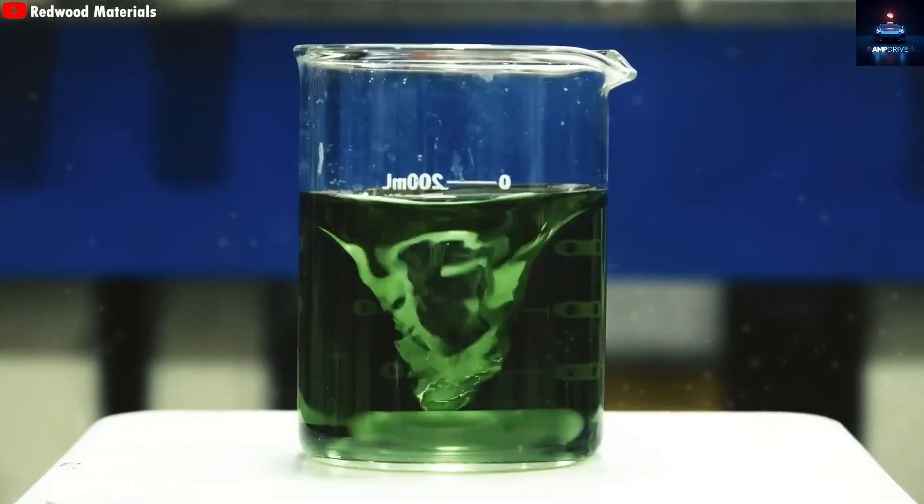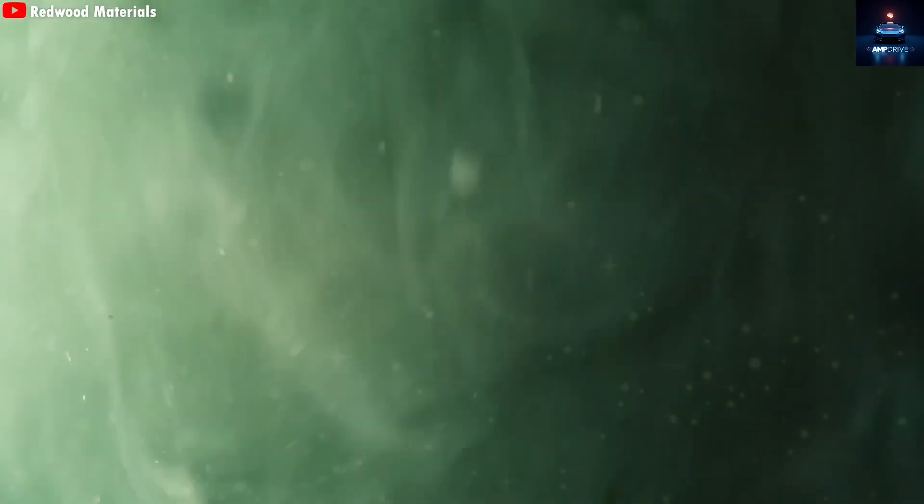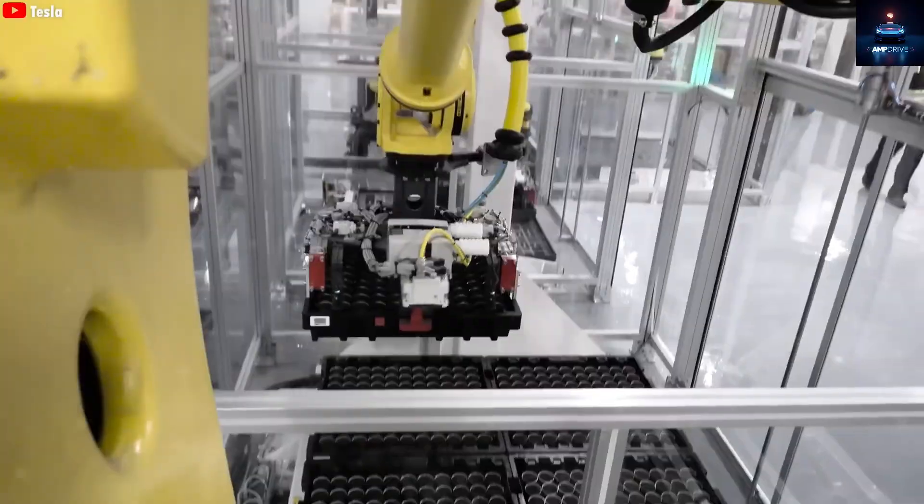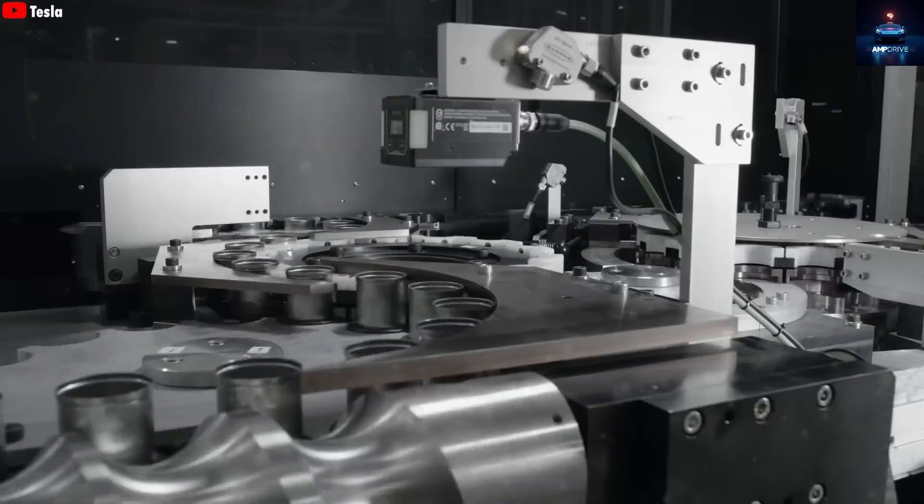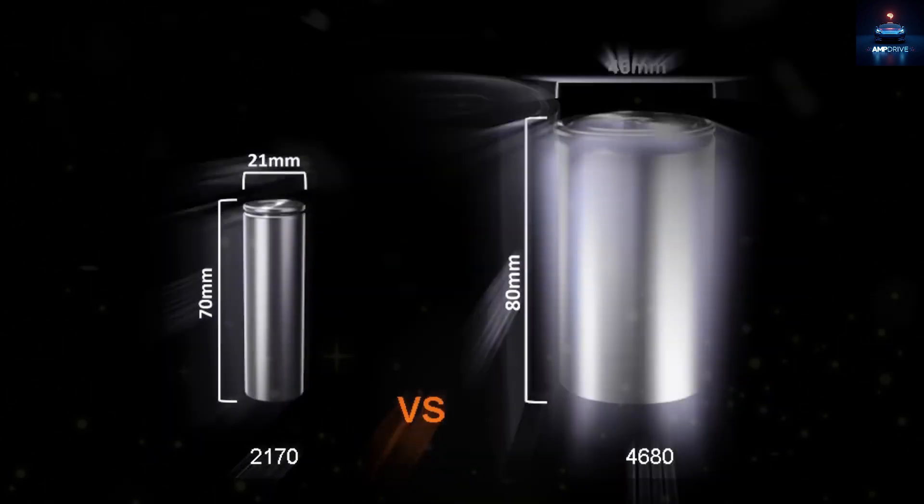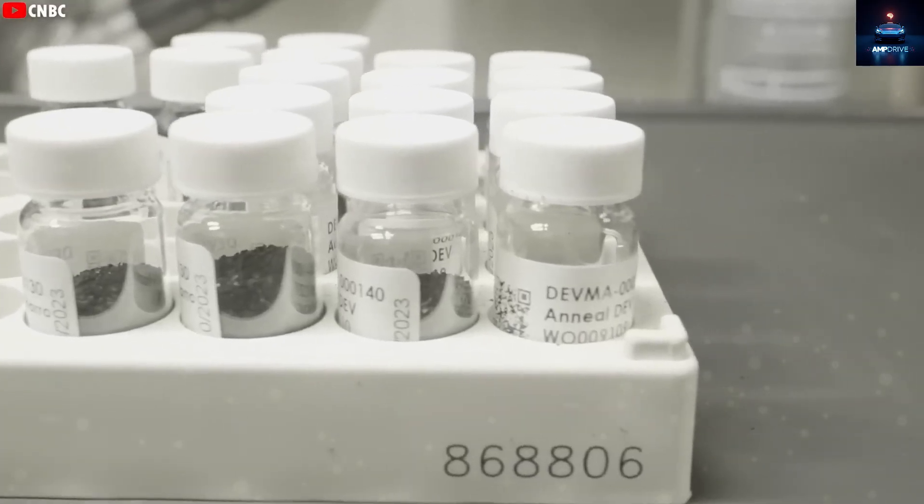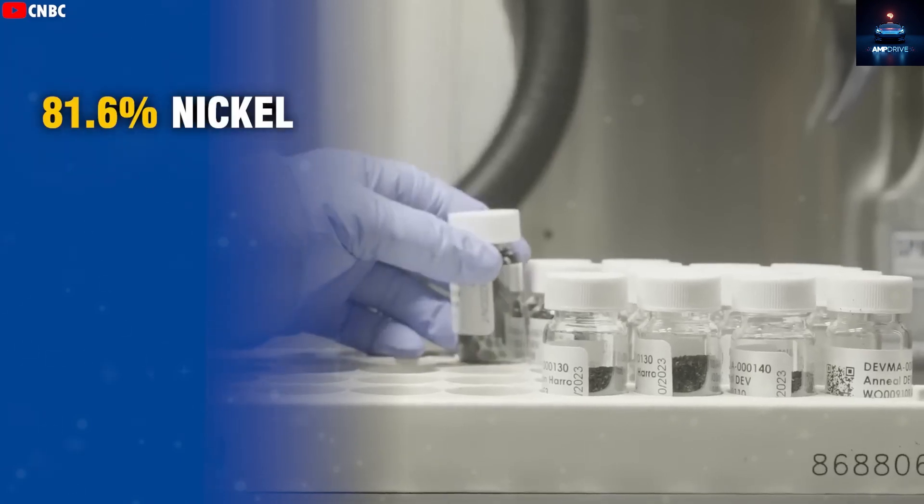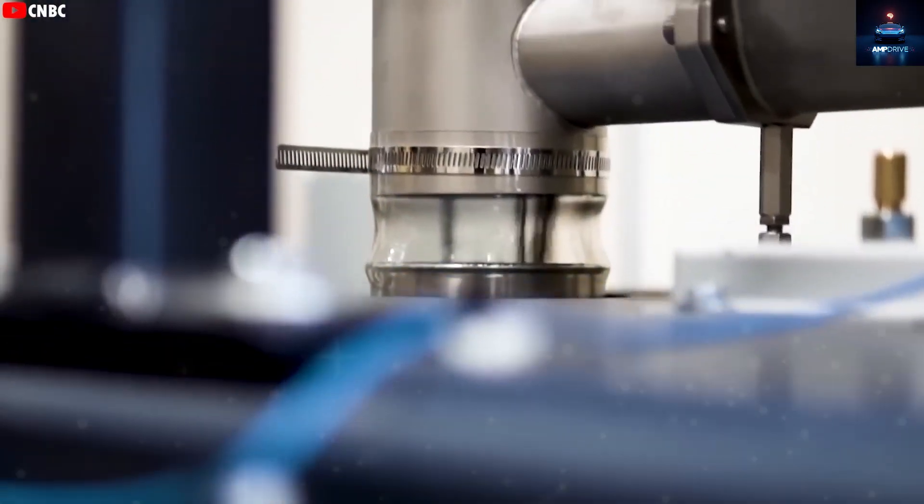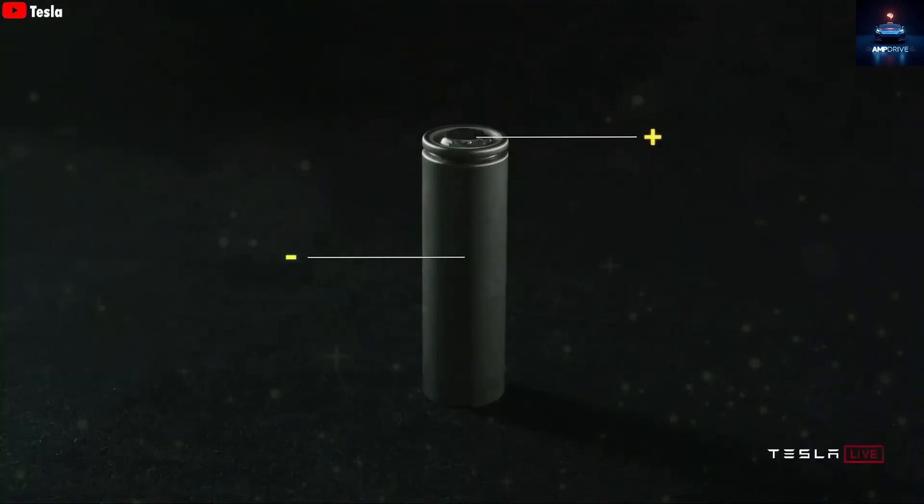The Tesla 4680 battery was first announced by Elon Musk in September 2020. So far, it is mainly being used in the Cybertruck. Technically, the 4680 is a cylindrical lithium-ion battery that measures 46mm in width and 80mm in height. Its cathode mostly contains nickel around 81.6%, with the rest made up of manganese and cobalt. The anode is made of silicon instead of the usual graphite.